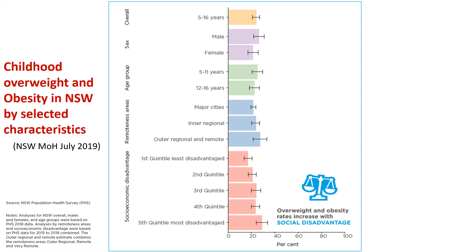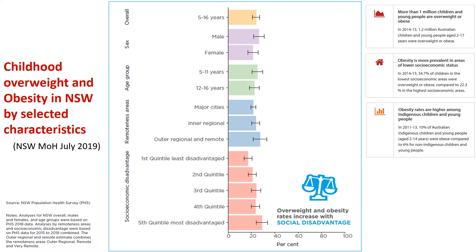Here we're looking at childhood overweight and obesity in New South Wales by certain characteristics. See in particular the bottom of the slide, which shows socioeconomic disadvantage, and the fact that the most disadvantaged quintile has the highest rates. We can say with confidence that overweight and obesity rates increase with social disadvantage. Obesity is more prevalent in areas of lower socioeconomic status and is higher amongst Indigenous children and young people.